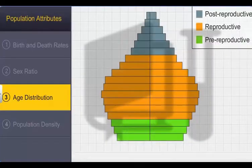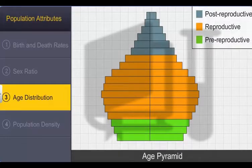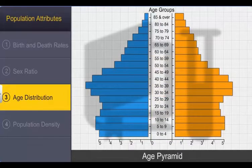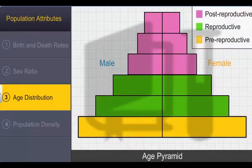A graphical representation of the various age groups is known as the age pyramid. In the human population, the age pyramid shows the age distribution of males and females in the same diagram. In fact, the shape of the age pyramid reflects the growth status of the population and indicates whether the population is growing, stable, or declining.